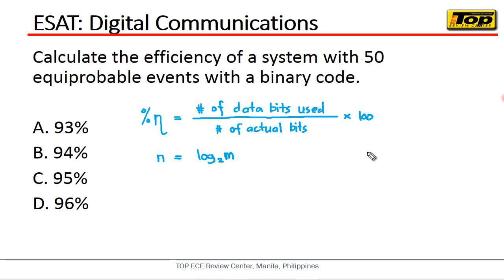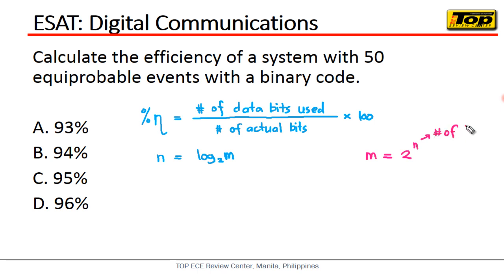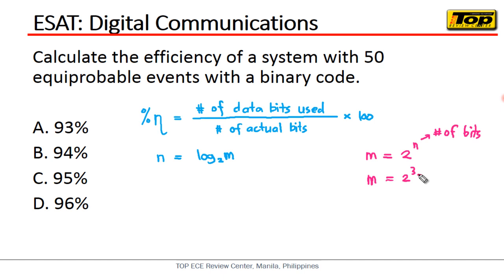When we take the number of equiprobable events, that will be m, and m is equal to 2 raised to n, where n is the number of bits. So if the number of bits is 3, then 2 raised to 3 gives us 8 combinations that can be formed with this number of bits.